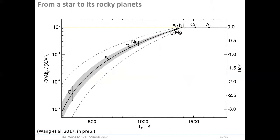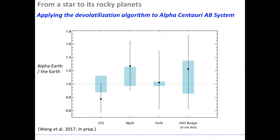For exoplanet chemistry, we only need to worry about certain elements — carbon, sulfur, oxygen, sodium, iron, silicon, magnesium, calcium, and alumina — because these elements account for about 99% of the mass of the terrestrial planet. We are applying this devolatilization algorithm to our central AB system and can compute key elemental ratios such as magnesium-to-silicon and iron-to-silicon ratios. Combining these elemental ratios tells us the first-order mineralogy of the planet, or what we call the bulk composition of the rocky body in the upper zone of this system.